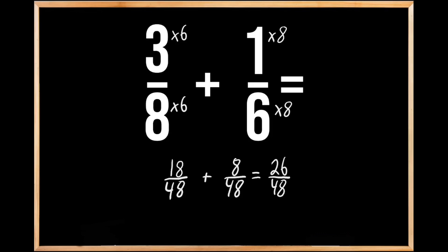We can simplify this fraction because both 48 and 26 share a common factor of 2. So we're going to divide both our denominator and our numerator by 2 to simplify this fraction.